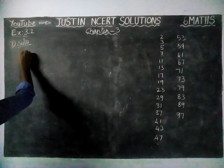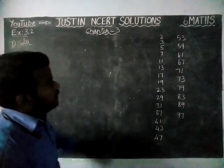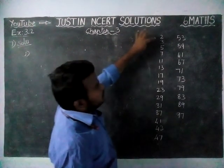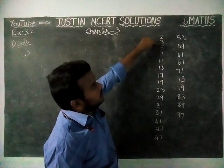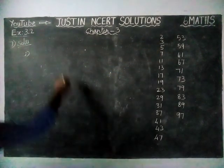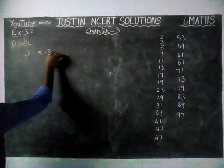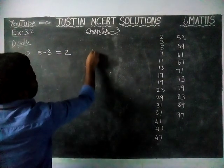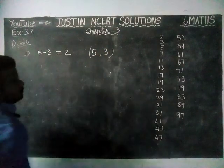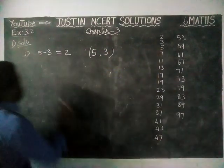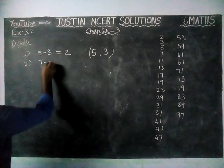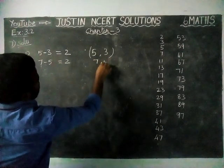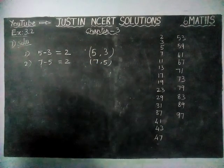For the first pair, the difference between 2 and 3 is only 1, so we skip that. The difference between 3 and 5 is 2, so 5 minus 3 equals 2. We can take (3, 5) as our first pair. For the second pair, 7 minus 5 is equal to 2, so (5, 7) are also twin primes.